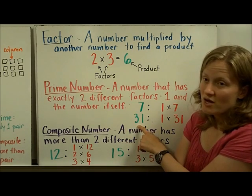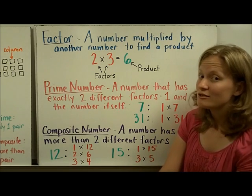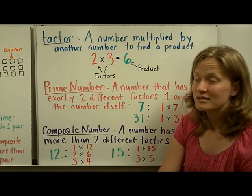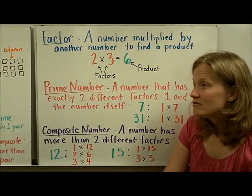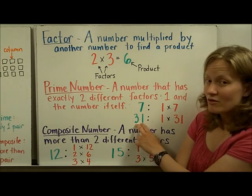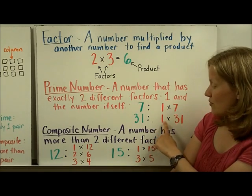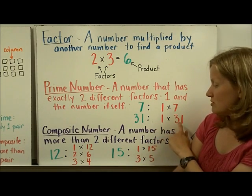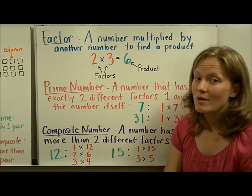Here's a bigger prime number, 31. I can't think of any multiplication fact that's going to give me 31 as the answer. Two times something, three times something, four times something, nothing multiplied together is going to give me 31 except for the number one and the number itself. One times 31, so that makes 31 a prime number.